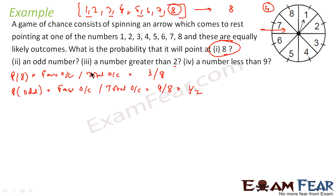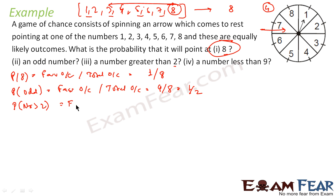Then what is the third one? Number greater than 2. So probability of a number greater than 2 — how many numbers greater than 2 are there? 3, 4, 5, 6, 7, 8 — there are 6 numbers that are greater than 2.